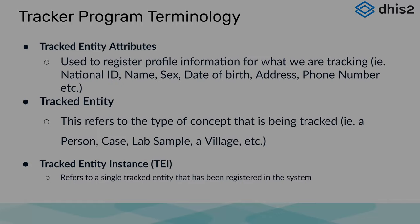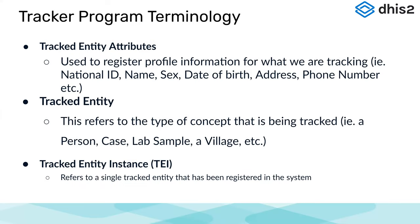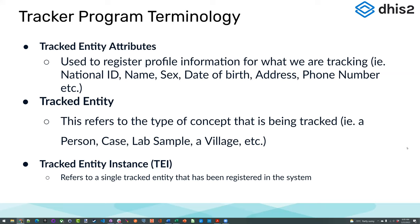Starting with tracked entity attributes: these are used to register profile information for what we are tracking. Using patients as our example, when we register them in the system to follow up their continuum of care, we collect things like their national ID, name, sex, date of birth, address, and phone number. These demographic details allow us to uniquely identify the person and retrieve their record any time we need to interact with that individual.